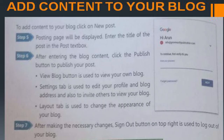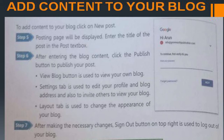How to add content to your blog: after creating your blog, the posting page will be displayed. Enter the title of the post and text in the post text box, then click the Publish button. The View Blog button is used to view your blog. The Settings tab is used to edit your profile and blog address and to invite others. The Layout tab is used to change the appearance of your blog. Click Sign Out to log out.